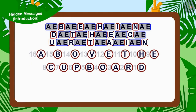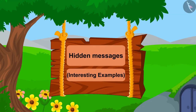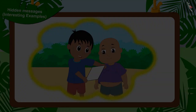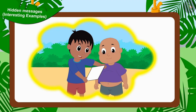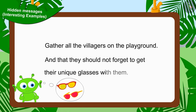Hello children. In the previous video, we learnt about hidden messages. In this video, we will see some more interesting examples related to this. Jeev has informed Raju and Bablu through a letter to gather all the villagers on the playground, and that they should not forget to get their unique glasses with them.